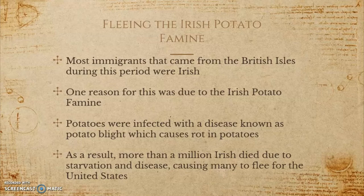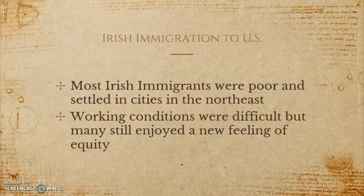Before it all ended, the potato famine resulted in the death of roughly one million Irish from either starvation or disease. Most Irish immigrants who migrated to the US were poor and settled in cities in northeastern states such as Massachusetts, New Jersey, New York, and Pennsylvania.